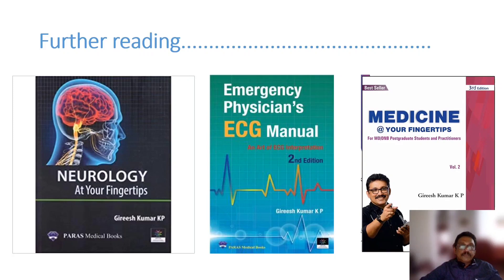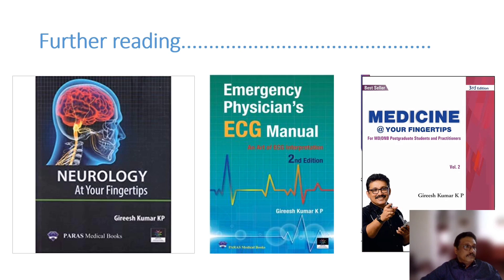In summary, migraine is one of the most common headache presentations to the emergency room. It presents with unilateral throbbing headache associated with vomiting. Management includes pain relievers, antiemetics, good sleep, acute agents such as ergotamine or triptans, and NSAIDs or paracetamol. Prophylactic drugs are given only for repeated attacks. CT or MRI is not routinely required — only when specifically indicated.